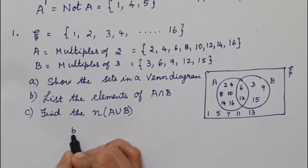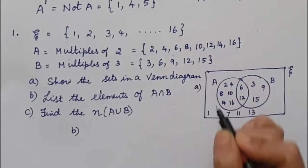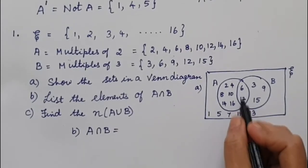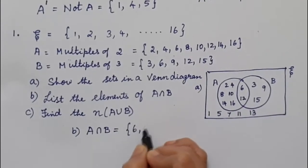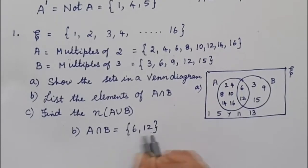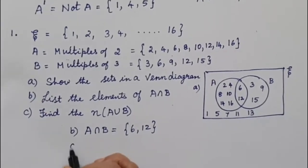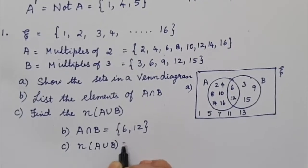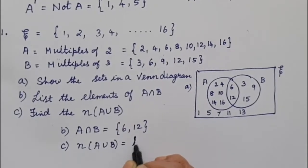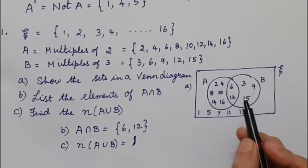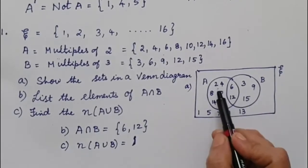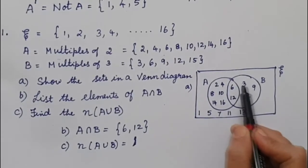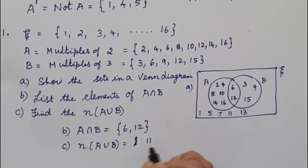Part B: list the elements of A intersection B — those common to both. So A ∩ B equals {6, 12}. Part C: number of elements in A union B. A union B includes all elements in circle A and circle B. Counting: 1, 2, 3, 4, 5, 6, 7, 8, 9, 10, 11. So the number of elements in A union B is 11.